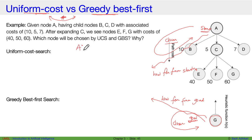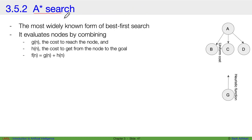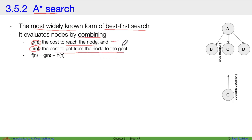The A* search algorithm is the most widely known form of the best-first search algorithm among informed search algorithms. It evaluates nodes by combining g(n), the cost to reach the node, and h(n), the cost to get from the node to the goal. The node pulled from the frontier to process is determined by the combination of your path cost function and your heuristic function h(n).